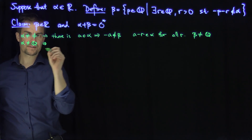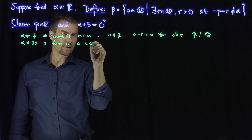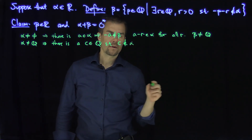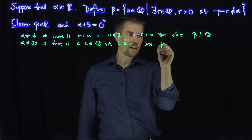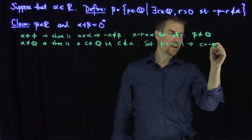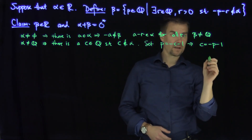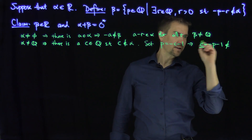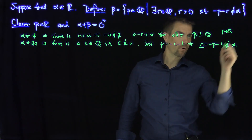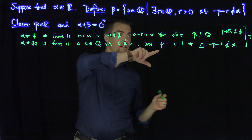Since alpha is not equal to Q, there exists a c in Q such that c is not in alpha. We set p to be negative c minus 1, so that c equals negative p minus 1. This means p is automatically in beta, because c is not in alpha. Therefore beta is not the empty set. So condition one of our Dedekind cut is satisfied: beta is not empty and beta is not all of Q.